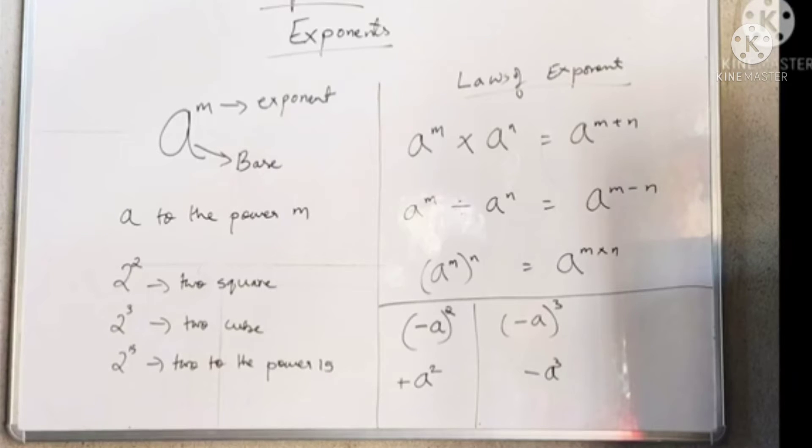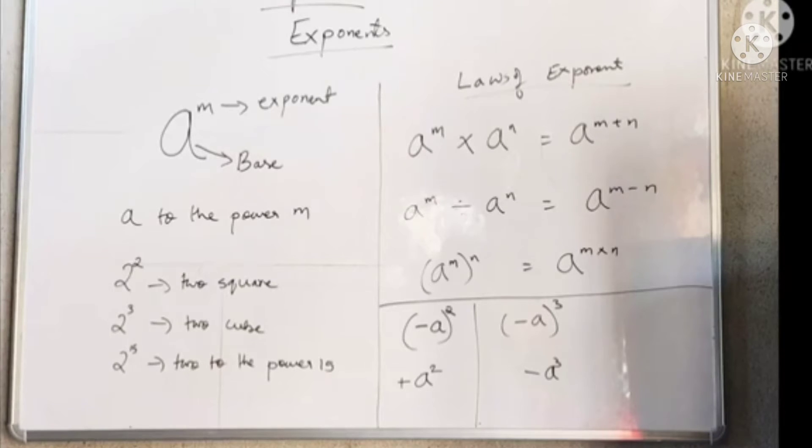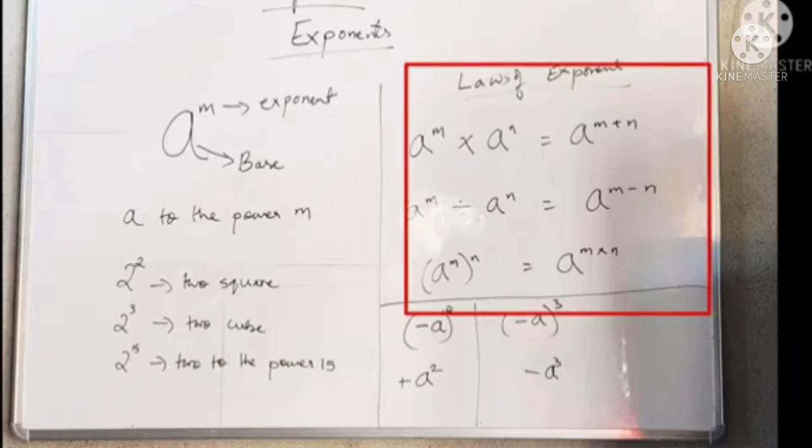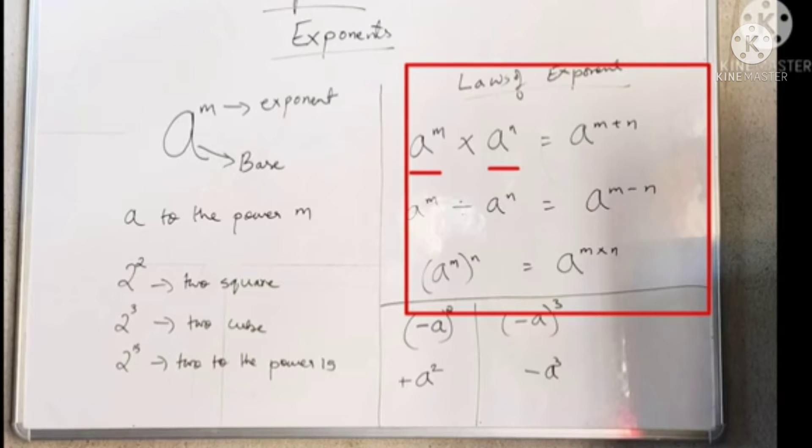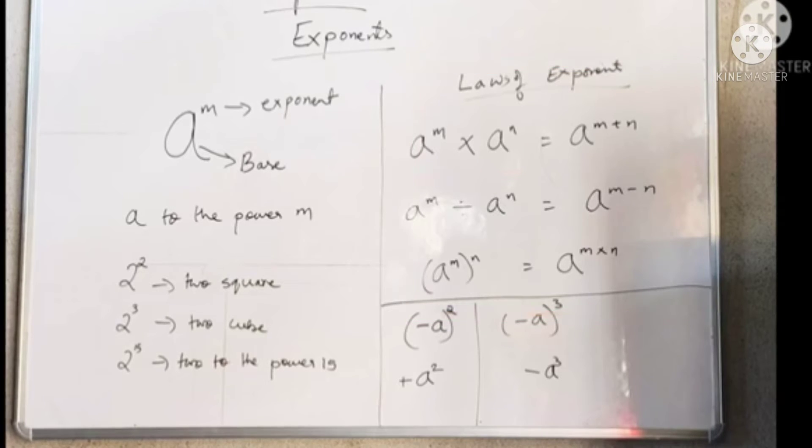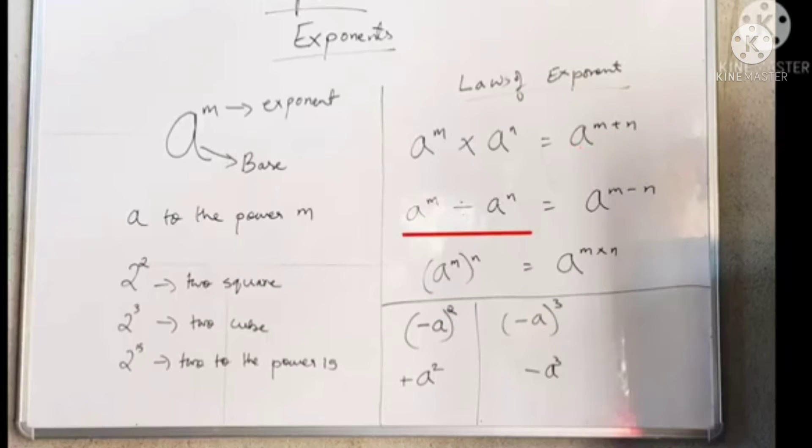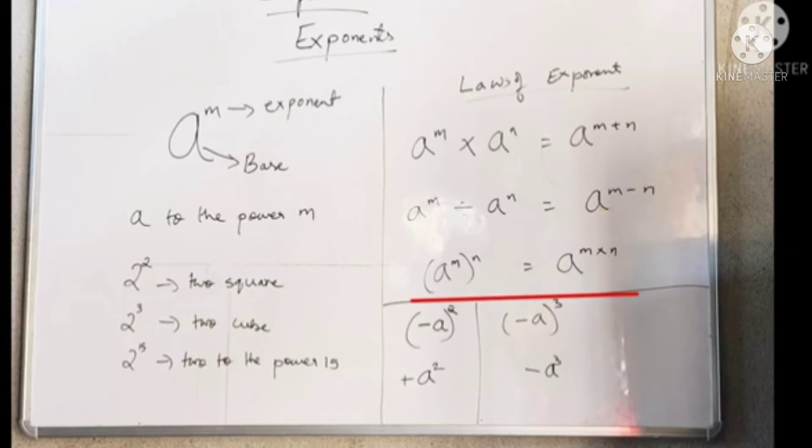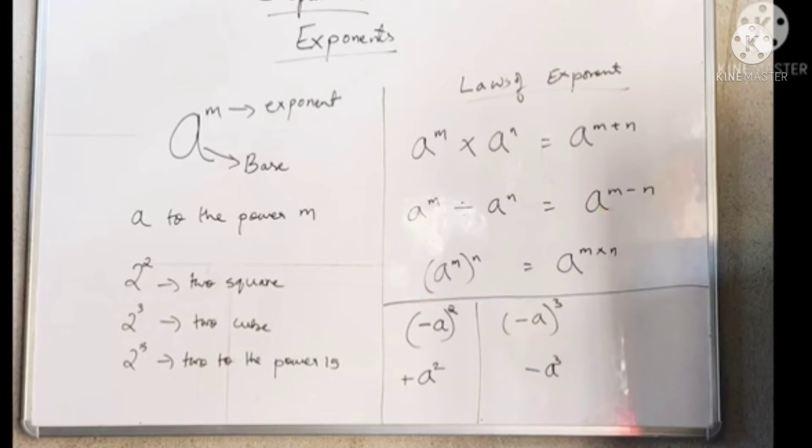In this context, there are a few laws of exponents we need to learn. The laws of exponents say that if the bases are same and numbers are getting multiplied, then the powers are added. If divided, the powers are subtracted. And if it's in the bracket, we will multiply.